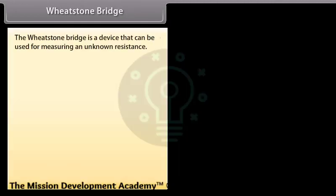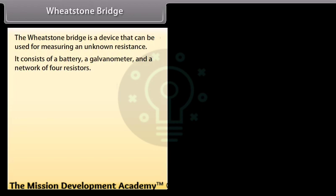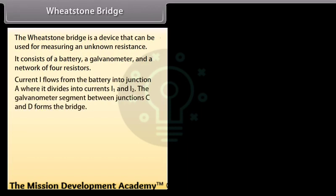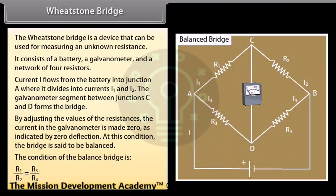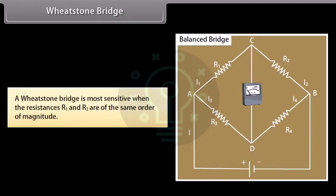The Wheatstone Bridge is a device used for measuring an unknown resistance. It consists of a battery, a galvanometer, and a network of four resistors. Current I flows from the battery into junction A, dividing into I1 and I2. By adjusting the resistances, the current in the galvanometer is made zero (balanced condition). The balance condition is R1/R2 = R3/R4. The bridge is most sensitive when R1 and R2 are of the same order of magnitude.